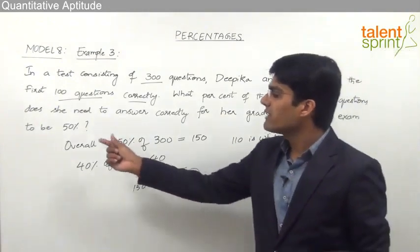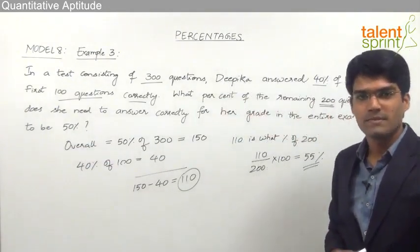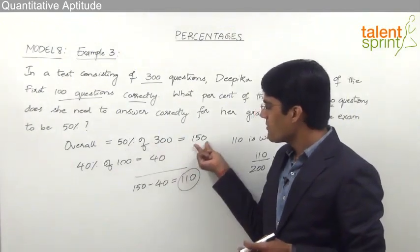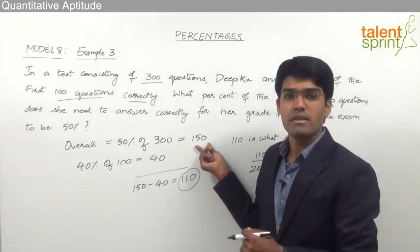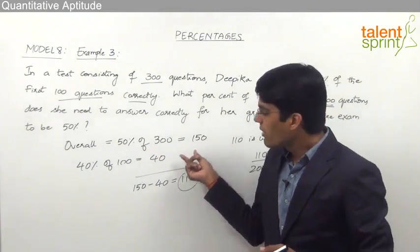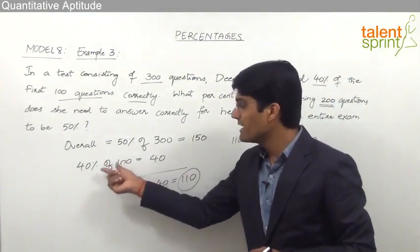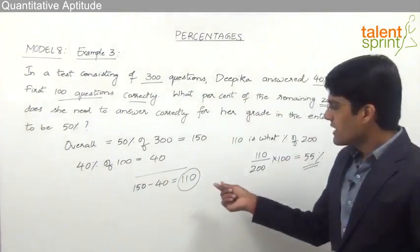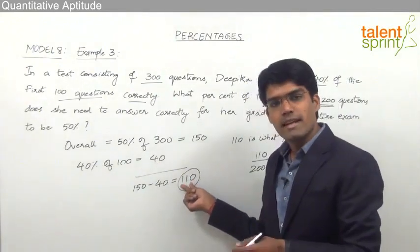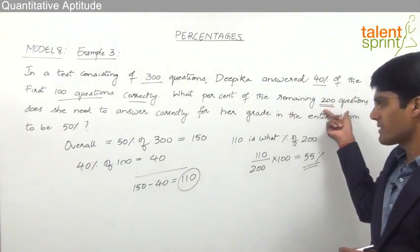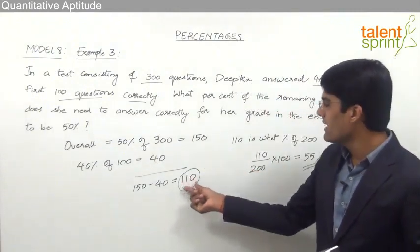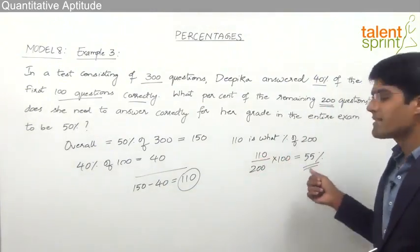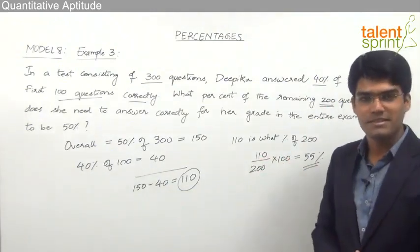So that her overall grade can be 50%. The key idea: overall 50% means 150 correct out of 300. She answered 40 correct from the first 100. The remaining 110 must come from the leftover 200 questions. So 110 ÷ 200 × 100 = 55%.